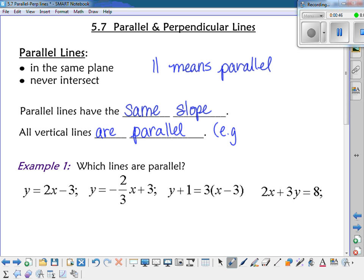So, for example, a vertical line would be like x equals 7 or x equals negative 5. Those two lines would be parallel to each other because they're both vertical.